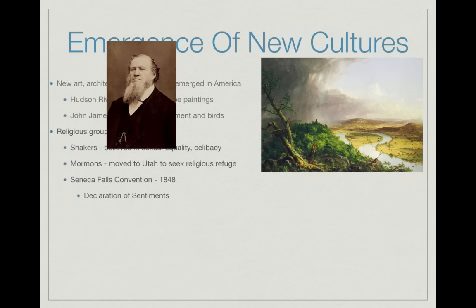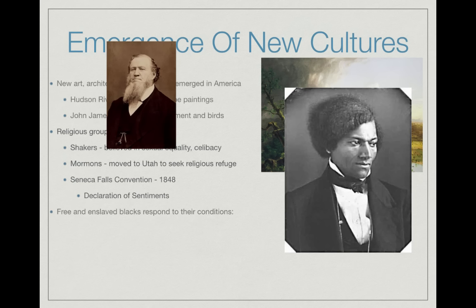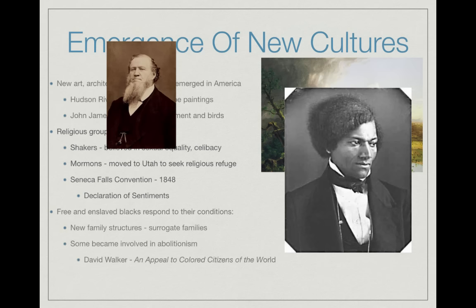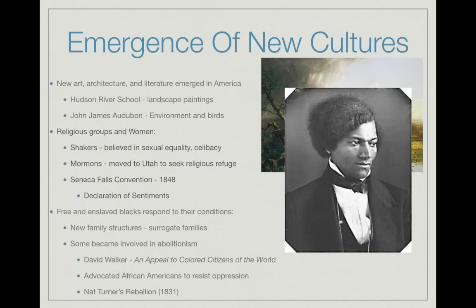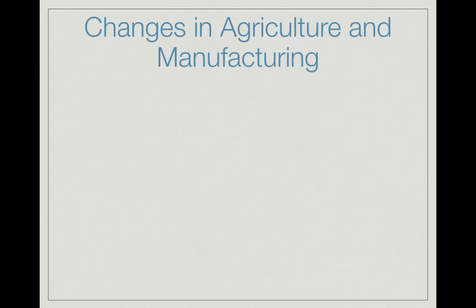Free and enslaved Blacks responded to their conditions in different ways. Enslaved people created new family structures — surrogate or adopted families — since families were often broken apart through the slave trade. Some became involved in abolitionism, like Frederick Douglass. David Walker wrote 'An Appeal to the Colored Citizens of the World,' urging violent rebellion to end slavery and advocating African Americans to resist oppression. Nat Turner's Rebellion in Virginia in 1831 resulted in the deaths of many whites and African Americans.